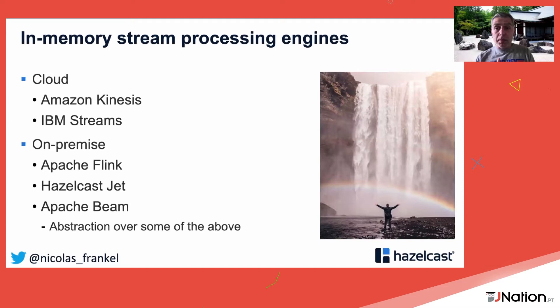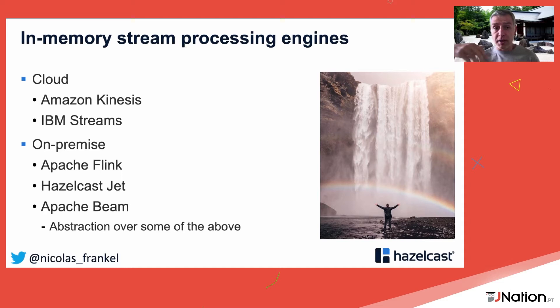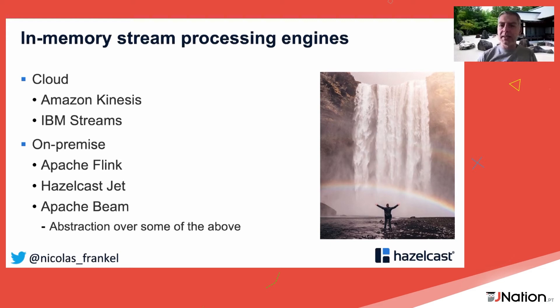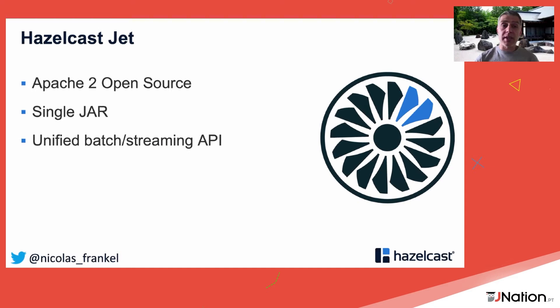There are in-memory stream processing engines — cloud ones like Kinesis or Google Pub/Sub, and on-premise ones like Flink or Hazelcast Jet. Apache Beam tries to be an abstraction layer over different implementations, which is cool but somewhat leaky since the abstraction was designed after the implementations. Hazelcast Jet is an in-memory streaming engine delivered under the Apache 2 open source license.